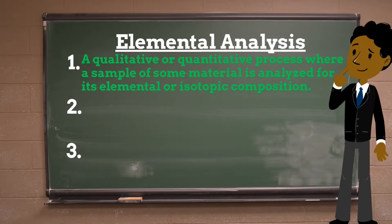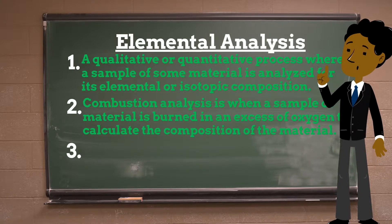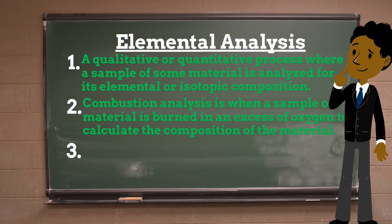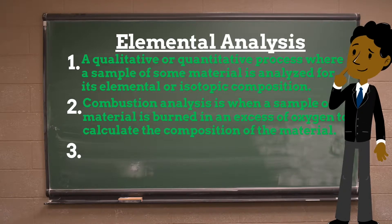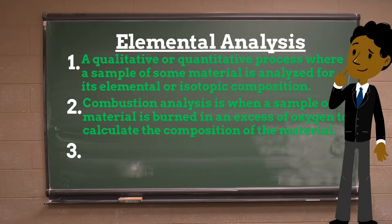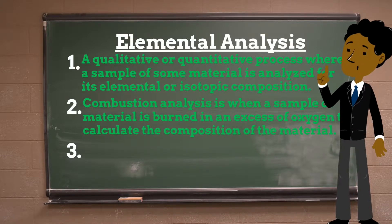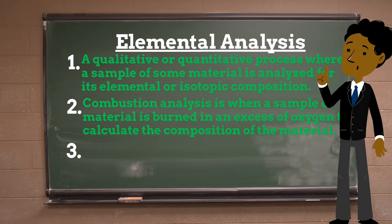The most common form of elemental analysis, CHNS analysis, is accomplished by combustion analysis. In this technique, a sample is burned in an excess of oxygen. Various traps collect the combustion products — carbon dioxide, water, and nitric oxide. The masses of these combustion products can be used to calculate the composition of the unknown sample.